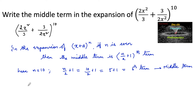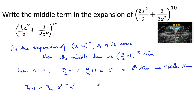Let us use the general term formula: T(r+1) = nCr · x^(n−r) · a^r, for the expansion of (x + a)^n.